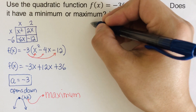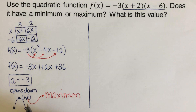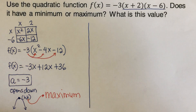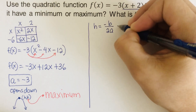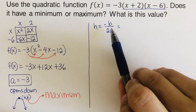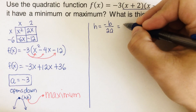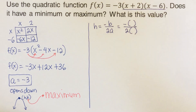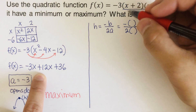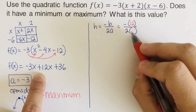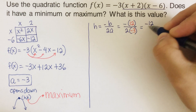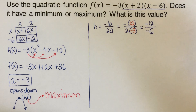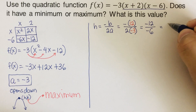The maximum value is the k, but we need to solve for h first. So h equals negative b over 2a. Always change the letters to parentheses before plugging in values: negative ( ) over 2( ). Our b is 12 and our a is negative 3. So that's negative 12 over negative 6, which gives us h equals positive 2.